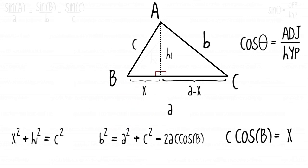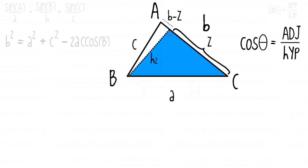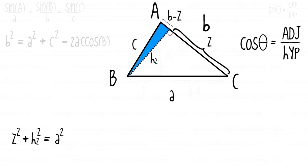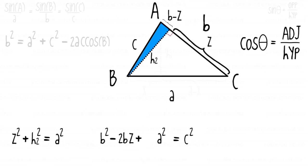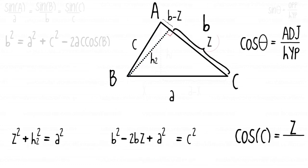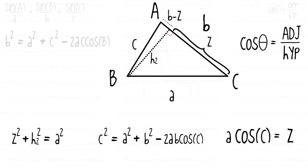We can find the remaining two cosine laws by using a different altitude. We repeat the steps from the last example: h2 divides side b into z and b minus z. We use the Pythagorean theorem to define the relationship between the sides of both right triangles, simplify the second equation, and substitute a² into it. We find cosine of C equals z over a, solve for z, substitute into the second equation, and rearranging gives us: c² = a² + b² − 2ab·cosine of C.